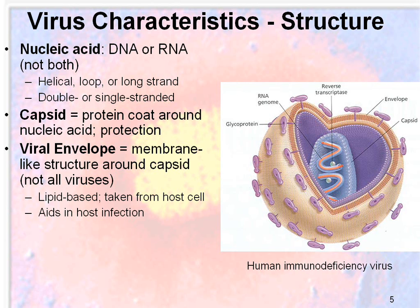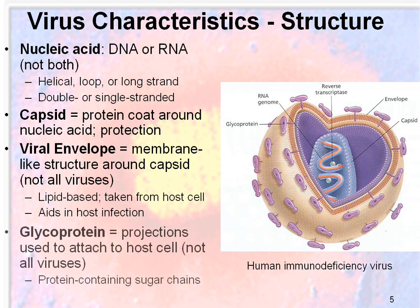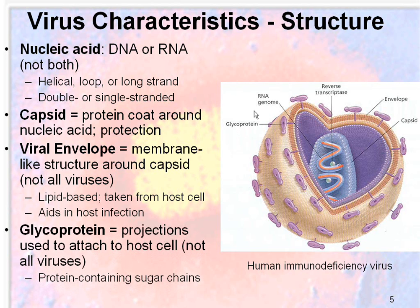The viral envelope is lipid-based, and it's actually taken from the host cell, so you can see they truly cannot rely on themselves. This helps with their infection of hosts. And lastly, there are glycoproteins — these little purple projections on the screen. The glycoproteins are specialized projections used to attach to the host cell. Not all viruses have these, but many do. It's a protein containing a sugar chain, very specific, and it helps them bind to host cells.